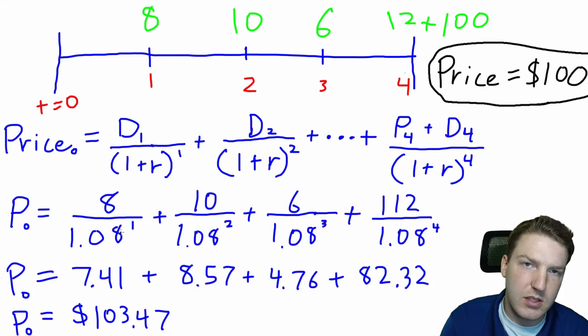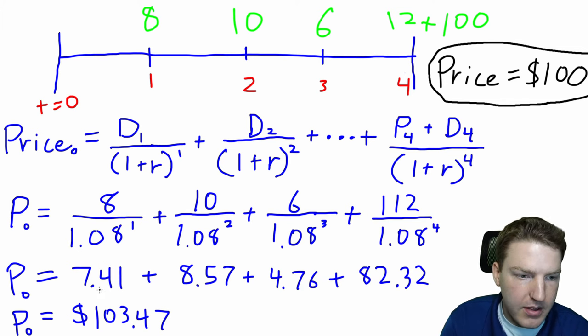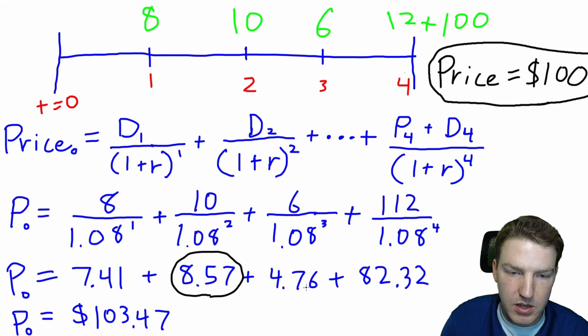So here is what this looks like. We talked about the first dividend of $8 being discounted back by 1.08 to the power of one, the time period that results in a present value of $7.41. The second dividend was $10 and we discounted it back for two years. That results in a present value of $8.57.